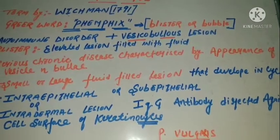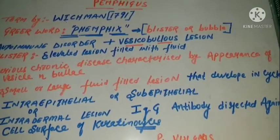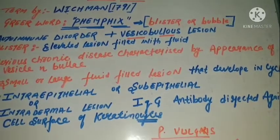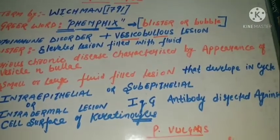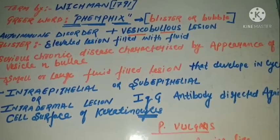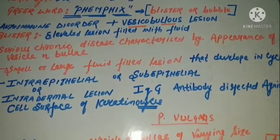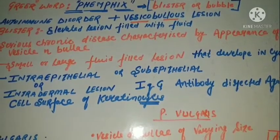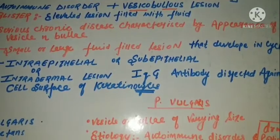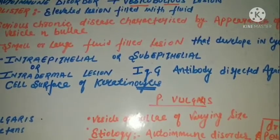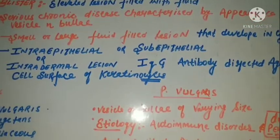Welcome to our channel Pharmacology. We are going to discuss pemphigus briefly, and then discuss the clinical features in detail. Pemphigus is an autoimmune vesicobullous disease — a serious chronic condition characterized by the appearance of vesicles and bullae, which are small and large fluid-filled lesions. It is an intra-epithelial lesion.